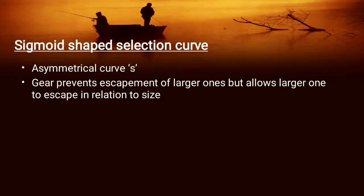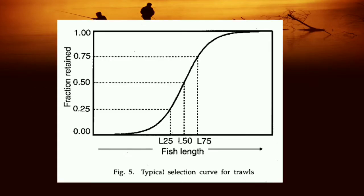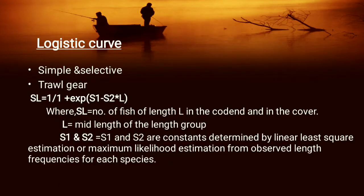If there is a mobile gear which moves, it allows smaller fish to escape while large fish are mainly stuck in it. So this is the S-shaped curve. Here the image shows L-25, L-50, and L-75. L-75 and L-50 are the optimum selection sizes, mainly the selection size. It is dependent on the knife-edge pattern.